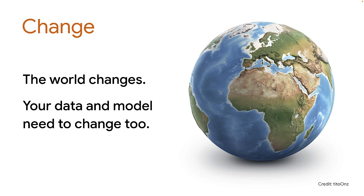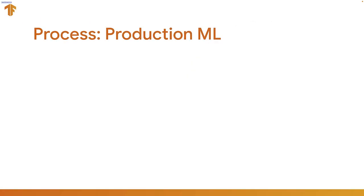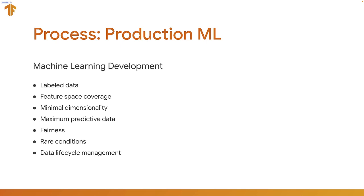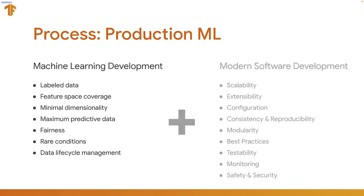First of all, change. The bottom line is the world changes and your data and model need to change too, otherwise they don't understand the world they're currently living in and they're still predicting for the old world. Process is what most people focus on for ML Ops, and it comes from the fact that you need all the things in machine learning — things like labeled data, fairness, rare conditions, and both the data and model life cycle. But you also need all the things that any modern software deployment needs, like scalability, testability, monitoring, and safety.